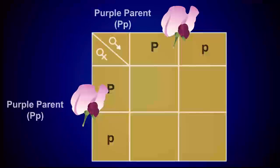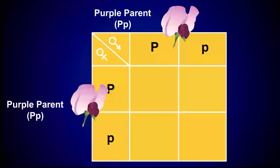In a Punnett square, the outside of the square represents the possible gametes that may be produced by each parent. In our example, a plant that is heterozygous for flower color produces gametes that either have the purple, or big P allele, or the white, or little p allele.